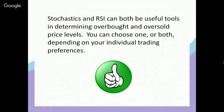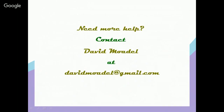Here's the takeaway: stochastics and RSI can both be useful tools in determining overbought and oversold price levels. You can choose one or both depending on your individual trading preferences. If you'd like more help with technical indicators or finance in general — stocks, options, trading, and investing — feel free to contact me at davidmodell@gmail.com. Thank you so much, and I'll talk to you soon.